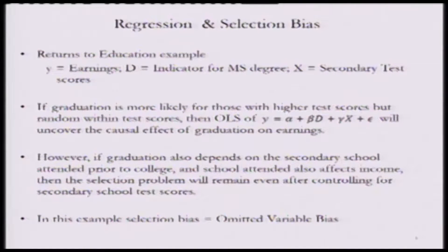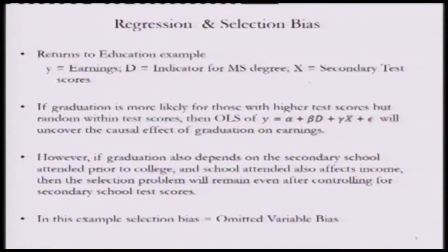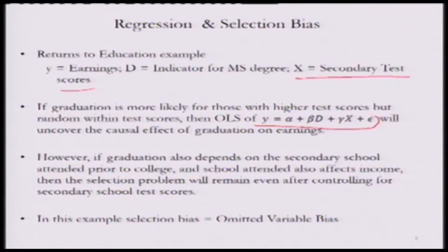Let us take a specific example to understand this. Suppose we take the example of returns to education, where d is an indicator of whether a person has a master's degree or not, and we want to understand whether a master's degree leads to higher earnings potential. And let us say x is represented by secondary school test scores. If graduation is more likely for those with higher secondary school test scores but random within test scores, then the OLS regression will uncover the causal effect of graduation on earnings.